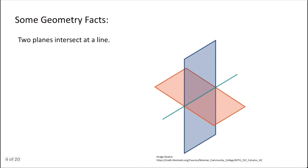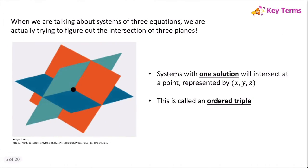Remember back in geometry, you learned that two planes will intersect at a line. When we're solving a system of three equations, we're trying to figure out where three planes will intersect. A system that has one solution will intersect at a point, represented by x, y, z, which is an ordered triple.